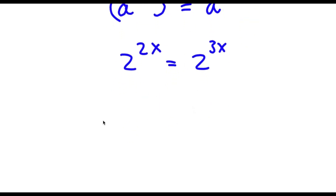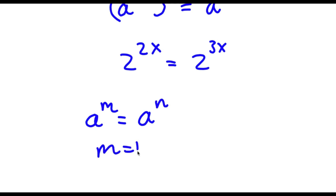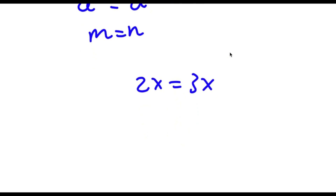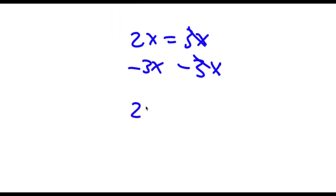Now if I have something in the form a to the power of m is equal to a to the power of n, this means that m is equal to n. So in this case 2x is equal to 3x. To solve this I'm first going to subtract 3x from both sides. These two cancel out and now I'm left with 2x minus 3x is equal to 0.